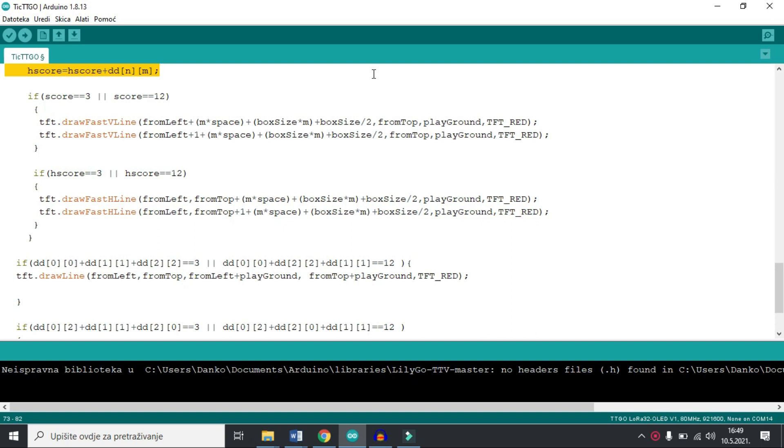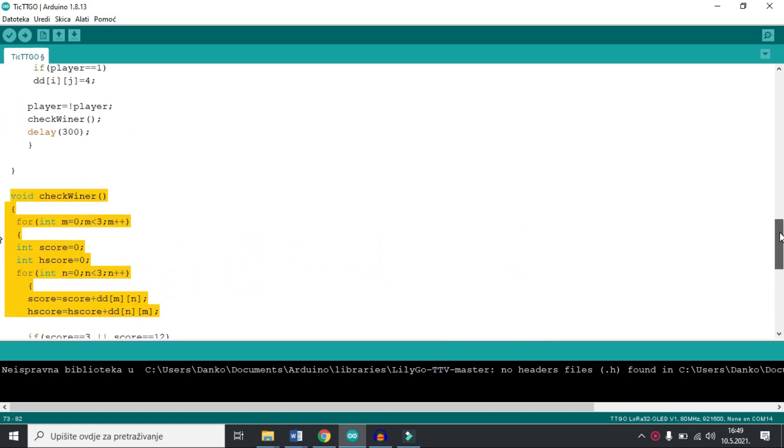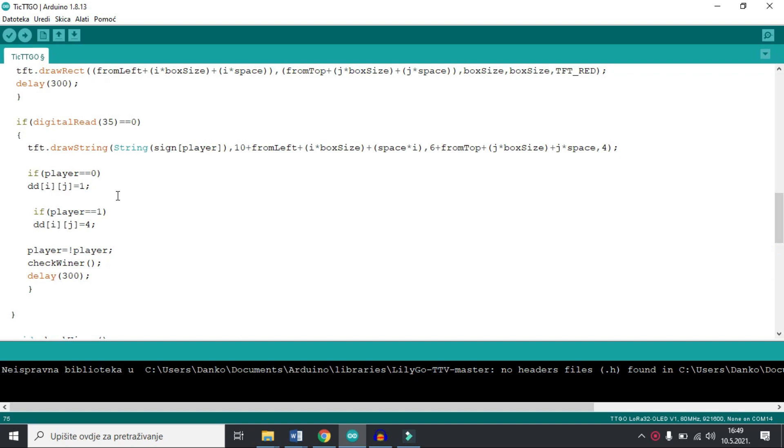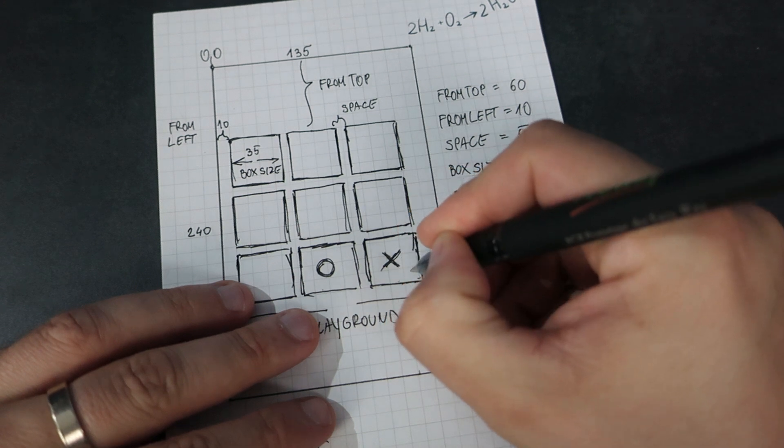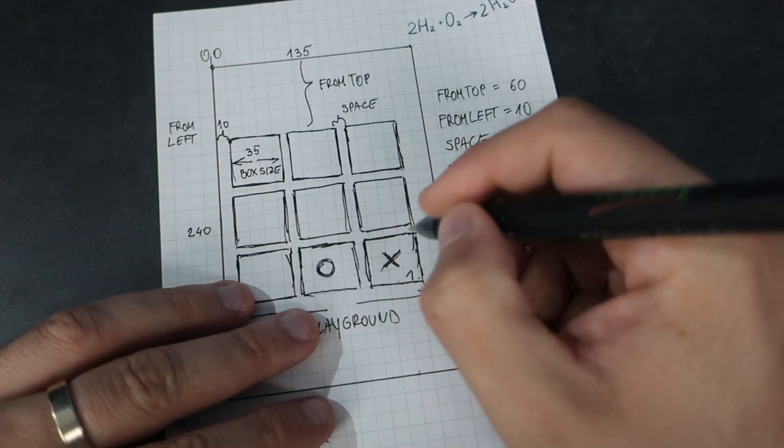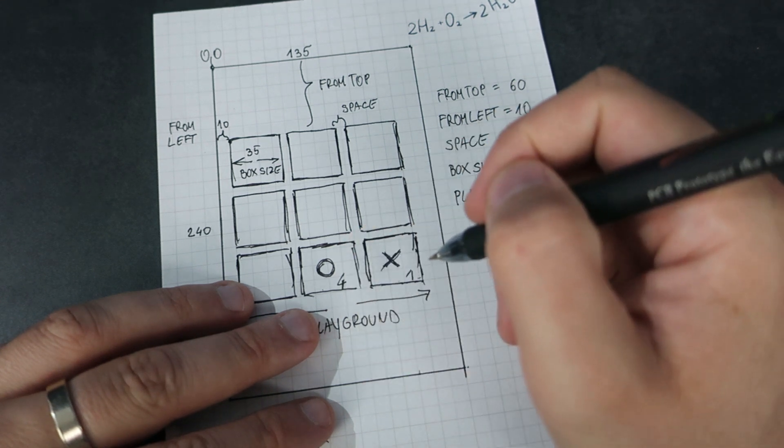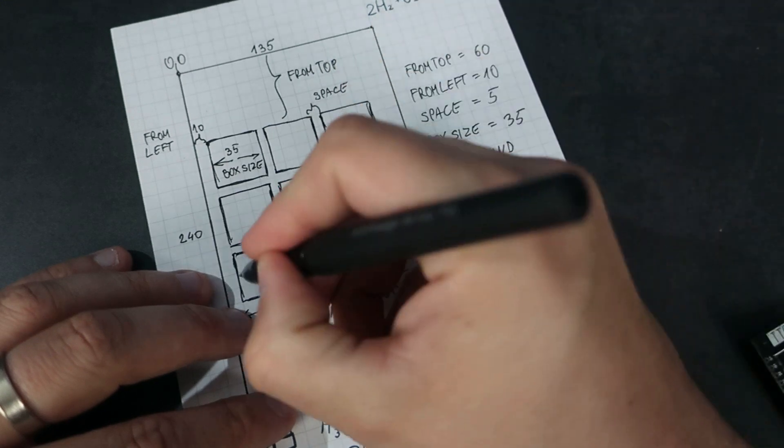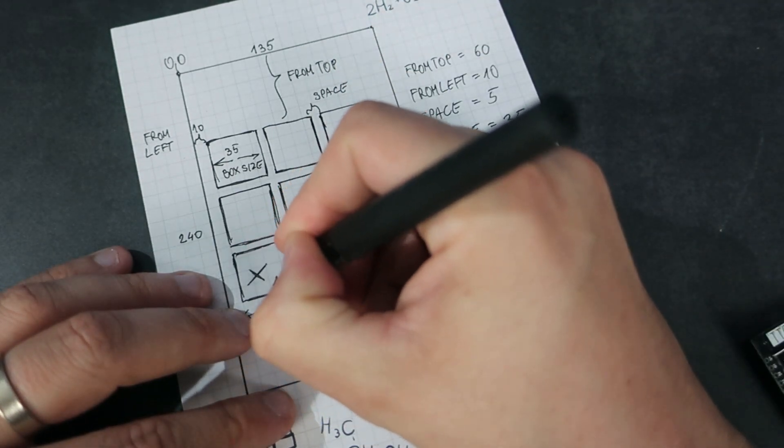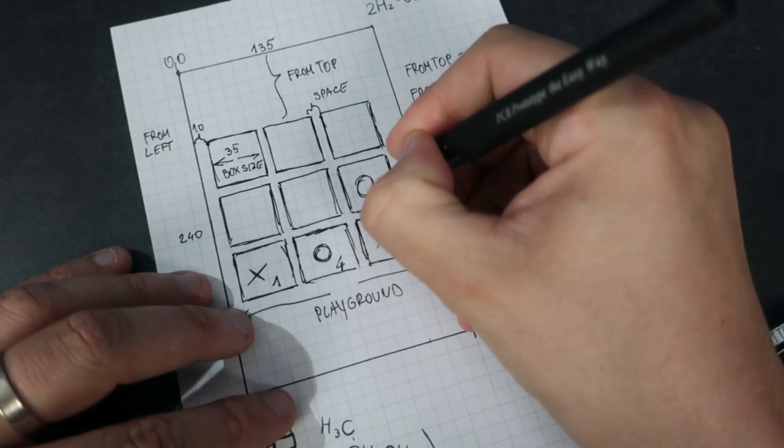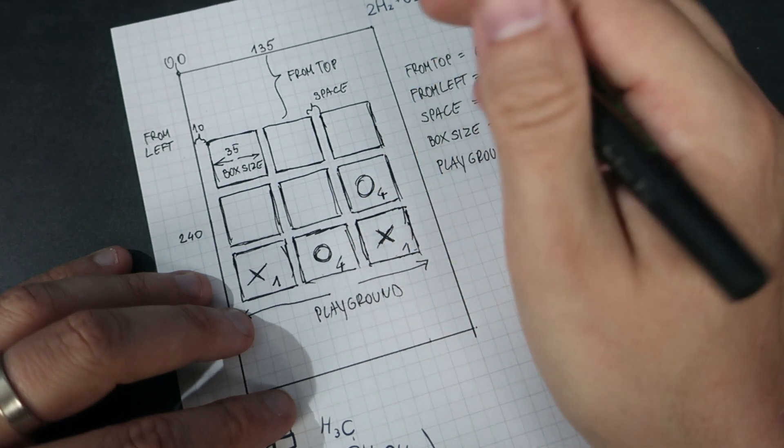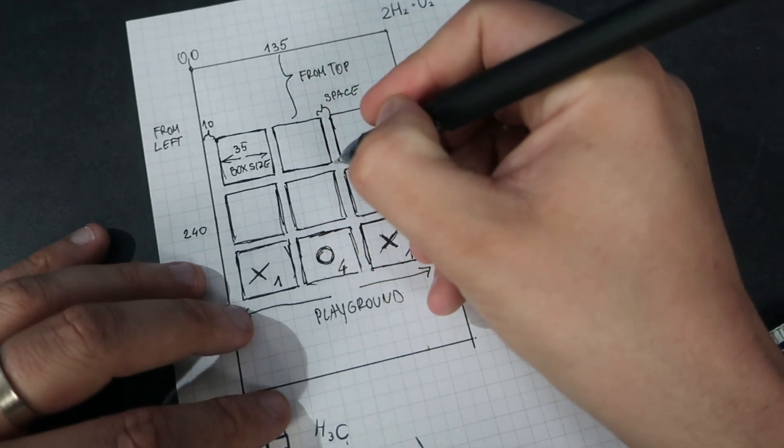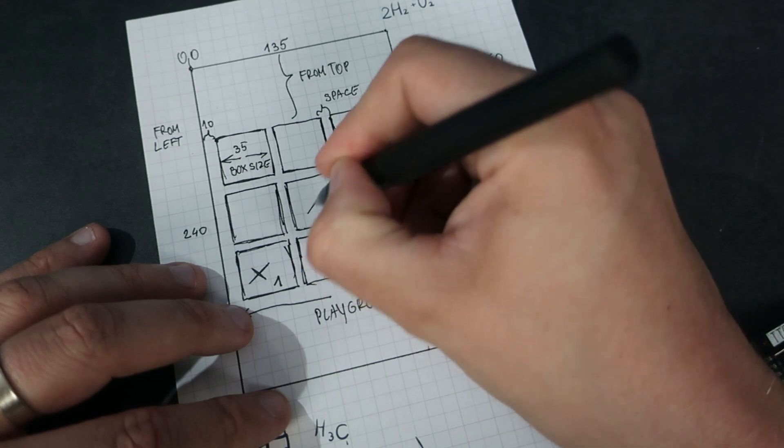Data are stored in a two-dimensional array called dd. If player 0 is playing, it will write 1 to the chosen place in the array. But if player 1 is playing, it will write 4 in the chosen box. So it will be something like this.